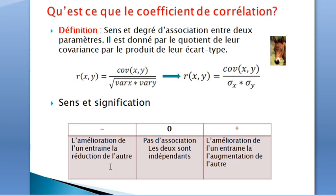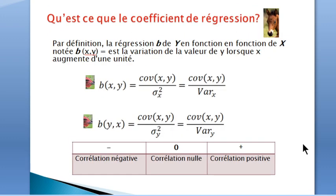For the interpretation: a negative correlation implies that the improvement of the target trait induces the depression of the correlated trait; zero correlation means that both traits are independent; and positive correlation implies that the improvement of the target trait induces the improvement of the correlated one.